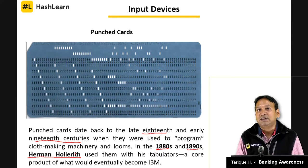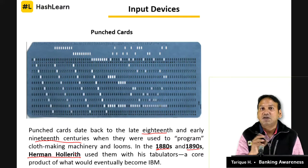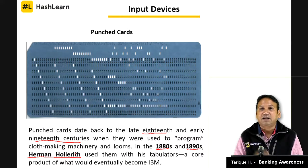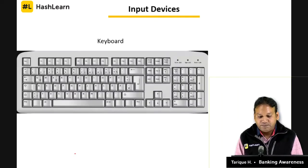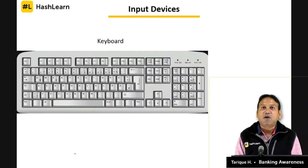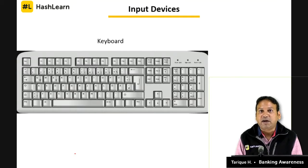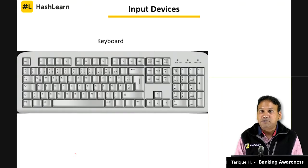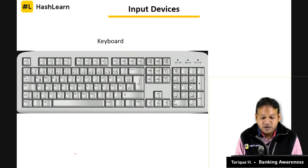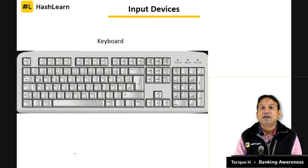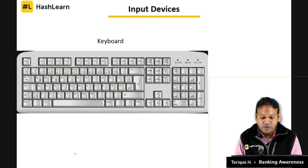People would punch numbers into cards, which would go to a punch card reader, then to a calculating device, and output would be created. This was invented by Hermann Hollerith. It may come up in the GK part of the examination. Punch card is followed by the keyboard — something all of you use every day.